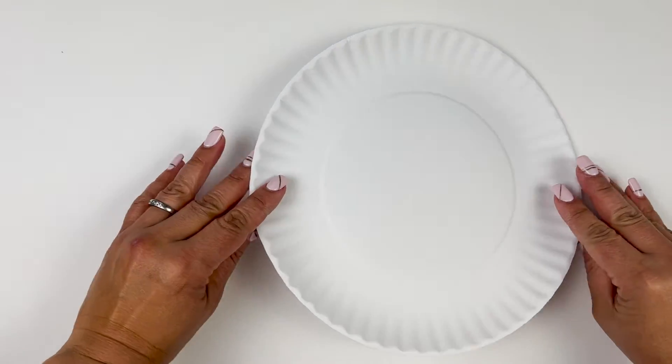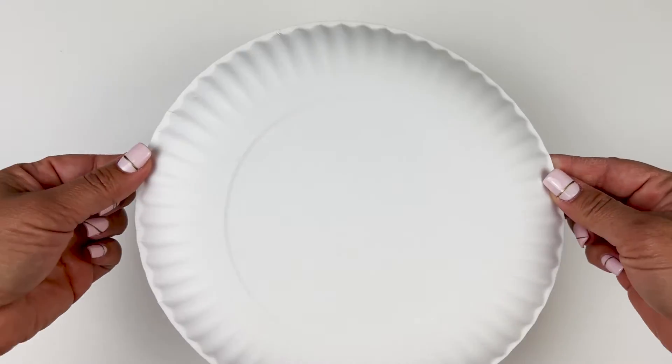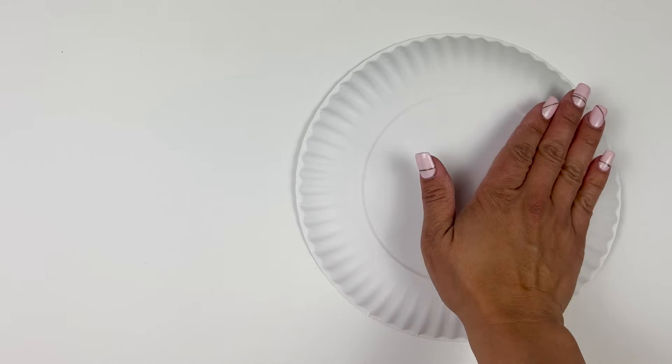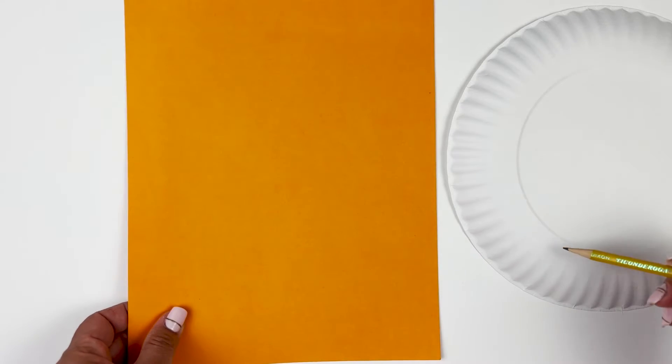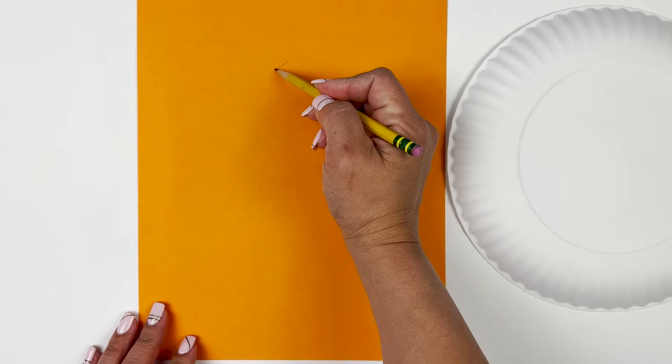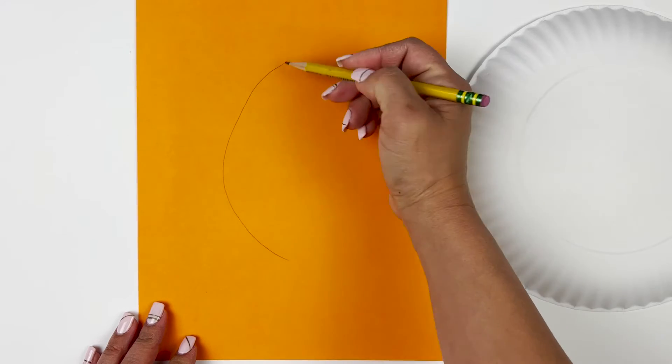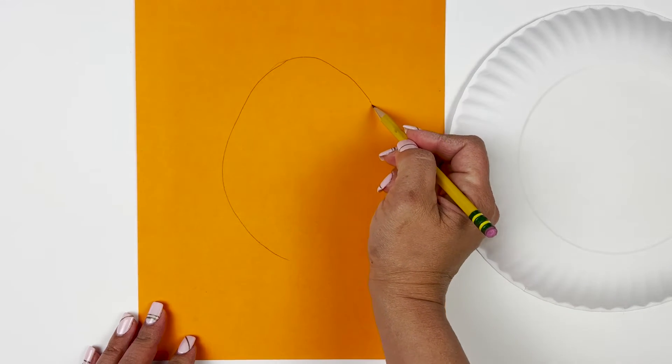This time we're going to take the bowl of the plate and flip it over so that the curve is on top. And we're going to get our other piece of paper and we're just going to draw an egg that would fit into the circle. An egg is a little rounder at the bottom, a little pointier at the top.